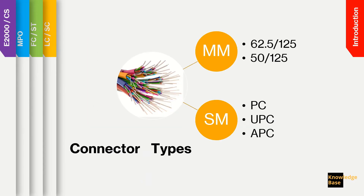Let us take a moment to look at the different types and classifications of fiber optic connectors. Fiber connectors could be single mode or multi-mode. All connectors that we see today are mostly physical contact or PC connectors. In multi-mode connectors, we have two core sizes: the 62.5/125 micron and the 50/125 micron. In single mode, however, we have only 9/125 micron.